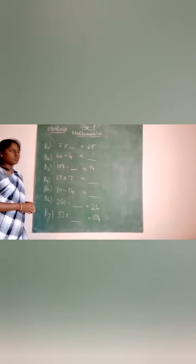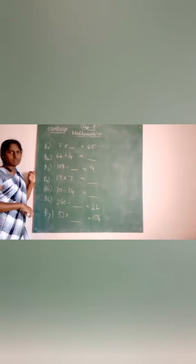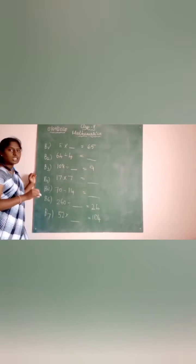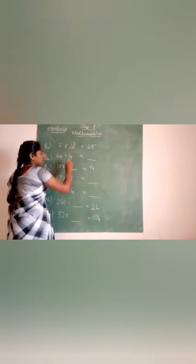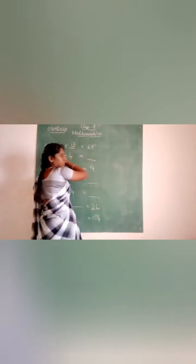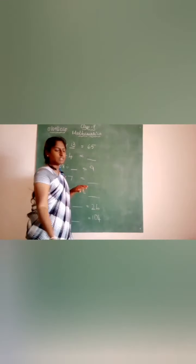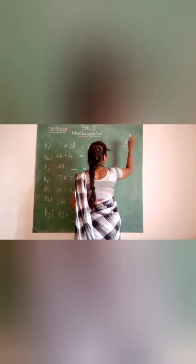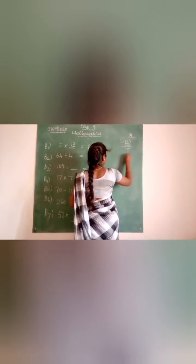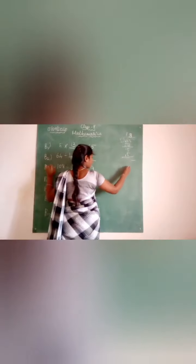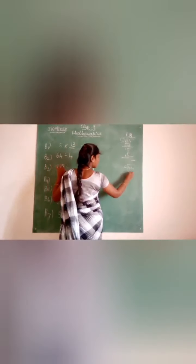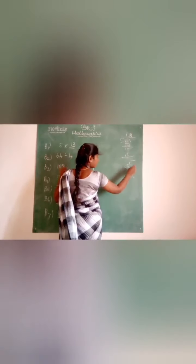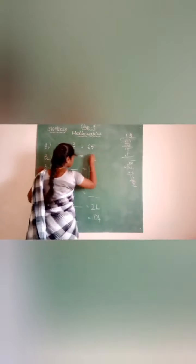Now let us discuss the answers for B1 to B7. You should be thorough with tables 1 to 15. Here, 5 times what gives 65? Since 5 × 13 = 65, the answer is 13. Next, 54 divided by some number: 4 goes into 54 giving a remainder, and 54 ÷ 4 with working gives the answer 13.5 (i.e., 5 remainder with divisor 4, answer is 13 remainder 2, so the missing number gives 13.5 — the answer noted is 5 with remainder, written as the answer).